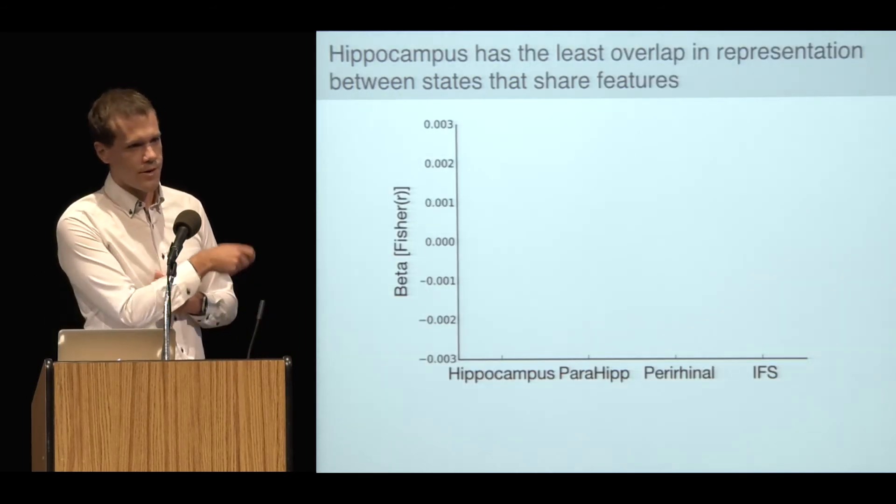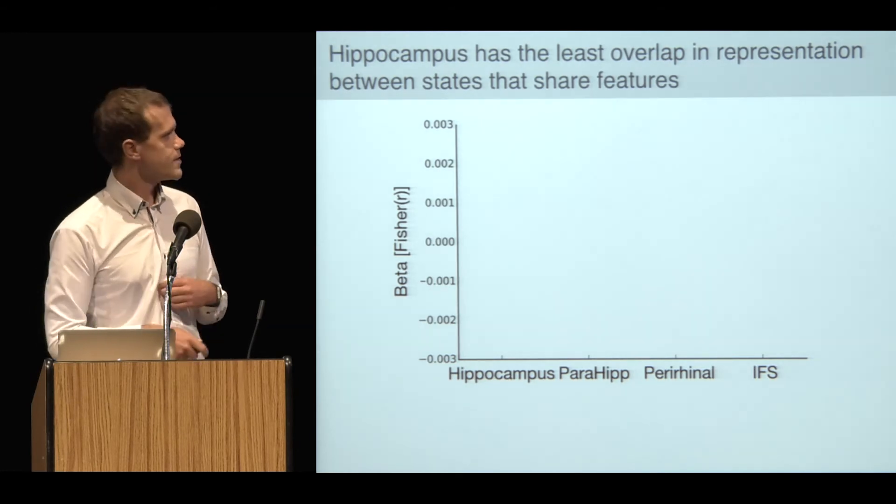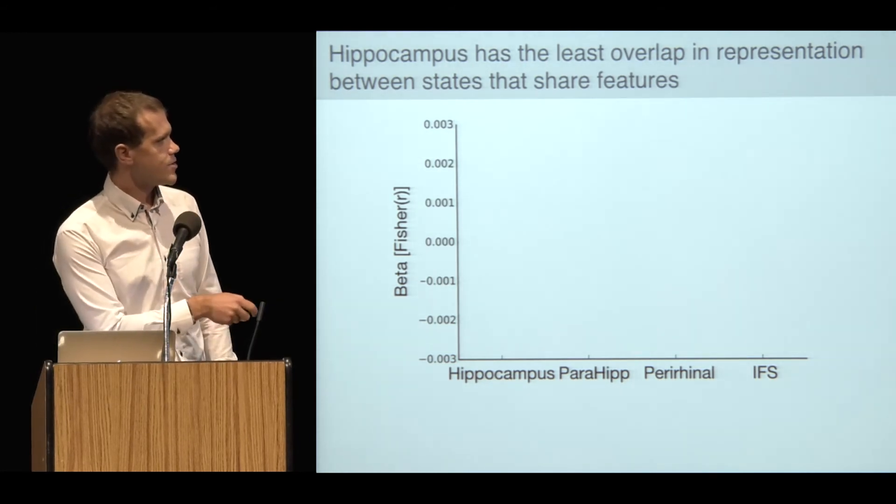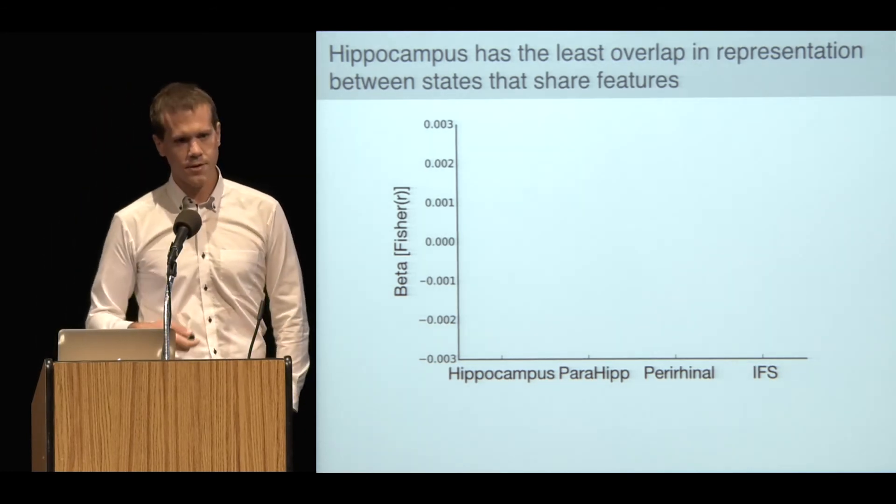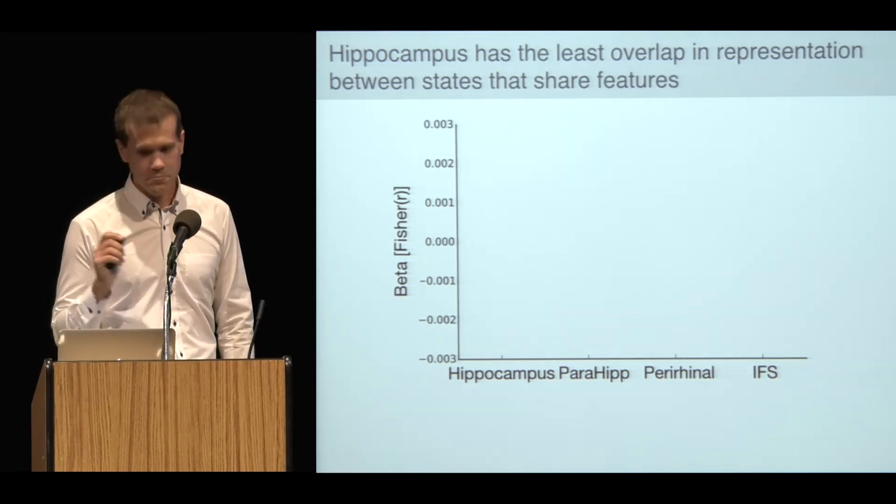This tests for pattern representations that are more similar for stimuli sharing features than for those that are not. Plotted here on the y-axis is the regression weight for that regressor, and the x-axis are each of my ROIs: hippocampus, parahippocampal, perirhinal, and then the inferior frontal sulcus, which is a part of prefrontal cortex I don't have time to talk about today.